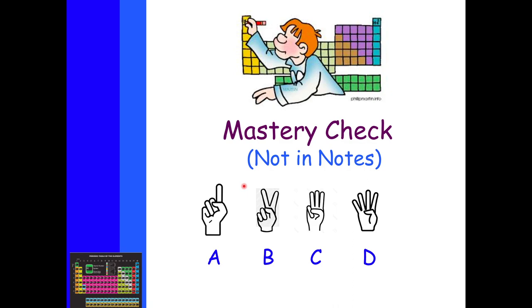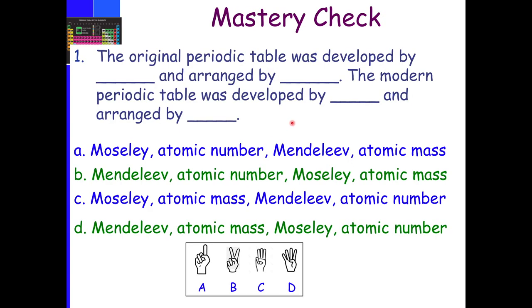So mastery check. The original periodic table is developed by blank and arranged by blank. The modern periodic table is developed by blank and arranged by blank.